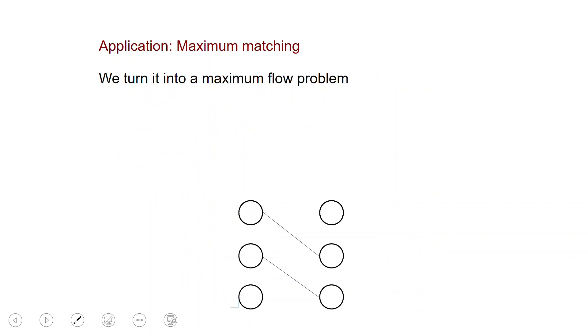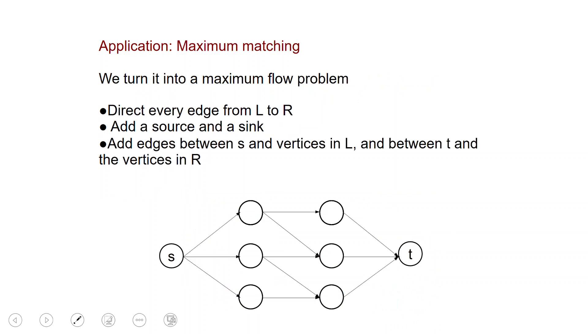The way in which we can solve this problem is very cute and uses the maximum flow algorithm. So we're going to turn it into a max flow problem. Given a graph, we're going to direct every edge from left to right. And we're going to add a source S and a sink T. And we're going to add edges from S to every vertex in L and from every vertex in R to T. And then we're going to set all the capacities of all edges to one. And on this graph, we're going to run a max flow algorithm like Ford-Fulkerson or Edmonds-Karp.